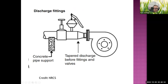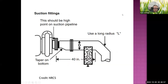On the discharge side, a tapered discharge fitting helps save energy during diameter transitions. A priming pump is used to draw water up, followed by a discharge valve. On the suction side, the eccentric reducer with a long-radius elbow is specified. Irrigation companies typically fabricate these fittings in-house by welding.